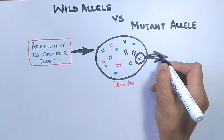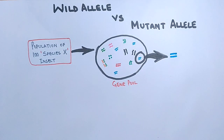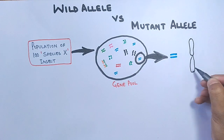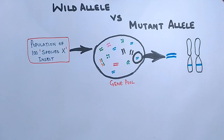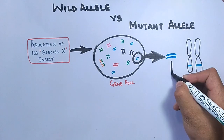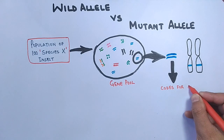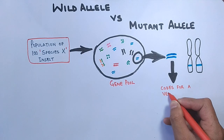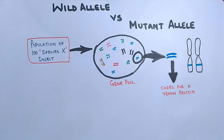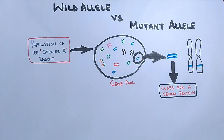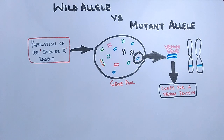To understand wild and mutant alleles, let's take out one gene from that gene pool, as shown in the figure. Its alleles will be present on the chromosomes in the manner shown in the diagram. Suppose this gene codes for a particular protein — specifically, it produces a venom protein within the population, so we call it a venom gene.